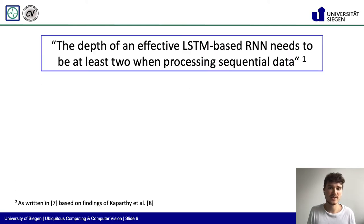Now, let's have a look at a statement which was written in a recent survey paper by Chen et al. on Deep Learning for Human Activity Recognition. It says that the depth of an effective LSTM-based RNN needs to be at least two when processing sequential data. This popular rule of thumb is based on findings presented by Karpathy et al., which visualized and investigated how LSTMs learn within the setting of natural language processing.